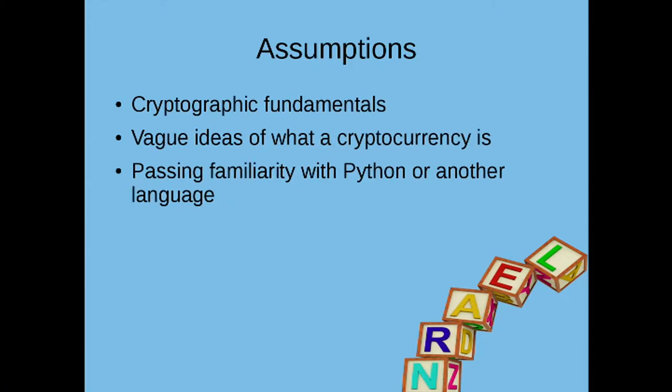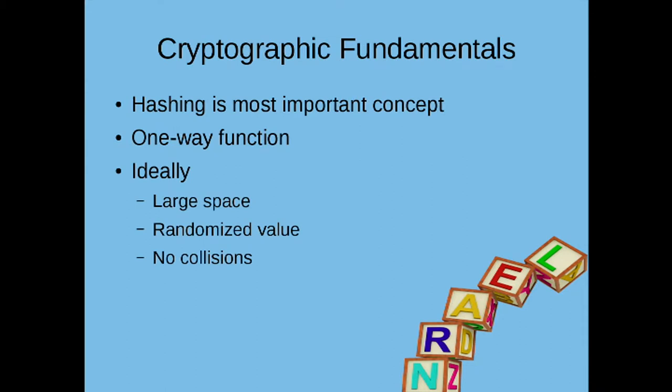For this talk, I have some basic assumptions: that you have some cryptographic fundamentals, a vague idea of what cryptocurrency is, and a passing familiarity with Python or another language. However, if you don't, we're going to take a quick lesson to make sure we're all on the same page. The most important cryptographic fundamental is going to come down to hashing. Hashes are a one-way function where you pass some data and get a unique identifier as a very large number.